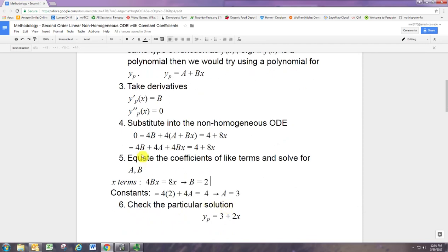Alright, well the constants also have to match up. And so there's two constants on the left, and there's one on the right. But we know what B is, we found it was 2. So you actually get this relationship which tells you what A is. So we know A, we know B, and the particular solution was supposed to be A plus Bx, so we know it's 3 plus 2x.